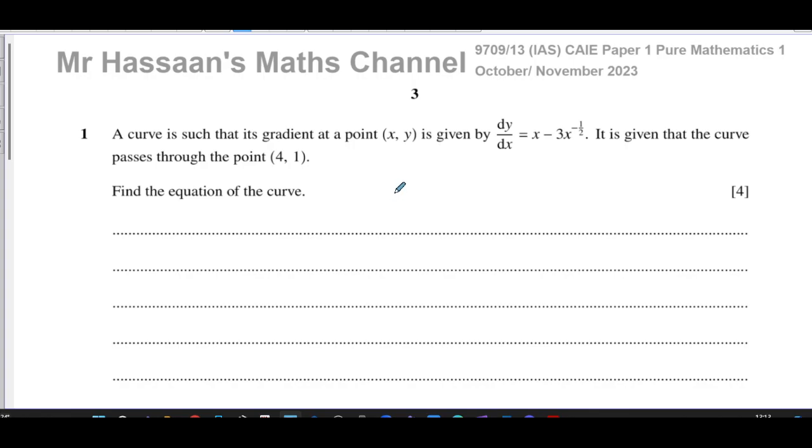We're told this is the gradient function for the curve and we want to find the equation of the curve. I'm going to show you two ways of answering this question. The standard way, which I'm going to show you first, is to say we know the gradient function dy/dx. When you copy down the question, copy it very carefully. One student wrote this as plus 3x to the power of positive a half. He wrote down one of these signs incorrectly, which led to wrong answers. Be very careful not to throw away marks by copying the question incorrectly.